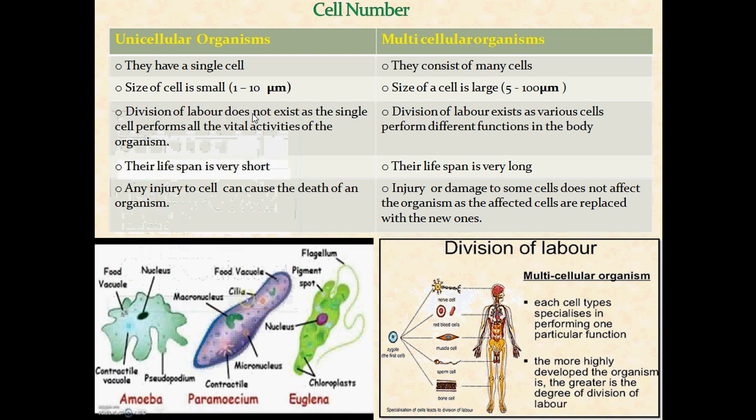Good morning students. We know that the cell has been discovered for a certain purpose of generating organisms, whether unicellular or multicellular. Based on the function a particular cell has to perform in the body of an organism, the cell has a certain shape, size, and number. Here we are going to talk about cell number.